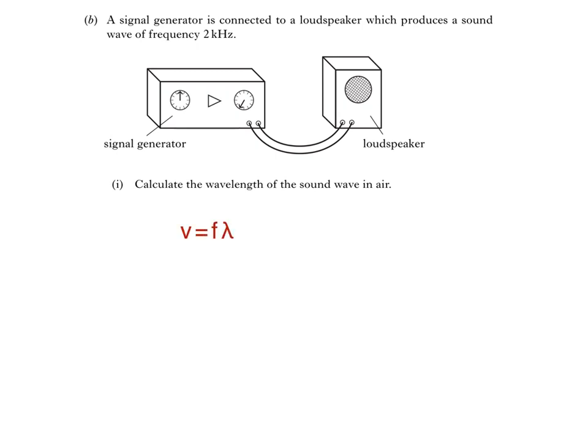V is the speed of sound, which we'll have to find in the datasheet at the front of the exam. F is the frequency of 2 kHz, and the last symbol, which looks like an upside-down Y, is lambda, which represents wavelength in meters. To make wavelength lambda the subject of the equation, divide both sides by frequency f. Next, substitute our values.